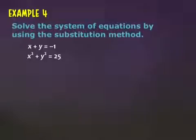All right, another one. I'll tell you it's a little bit easier — that's the good news. Solve the system of equations by using the substitution method. The first equation is x plus y equals negative one. The second one is x squared plus y squared equals 25.